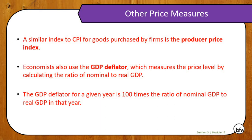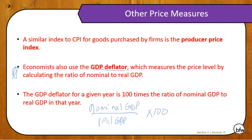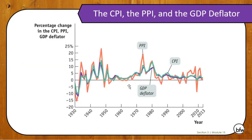Now, other price measures. The only one that you need to write down is the GDP deflator. Basically, economists will use this, which measures the price level by calculating the ratio of nominal to real GDP. The GDP deflator for a given year is 100 times the ratio of nominal GDP to real GDP. So you would simply take nominal GDP divided by real GDP times 100 to get the GDP deflator. The CPI, producer price index, and GDP deflator are all just different ways of measuring the change in prices for things.